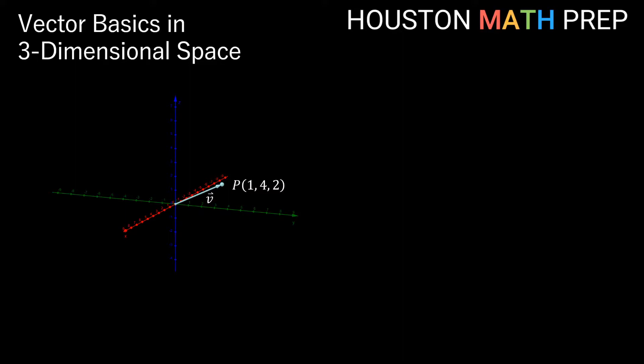When we write a vector, instead of writing its components in parentheses like we do with a point, we actually write them in angled brackets. So when we see these angled brackets, this can give us another context clue that we're talking about a vector. So it's important to remember that the point 1, 4, 2 is kind of a different object than the vector 1, 4, 2.